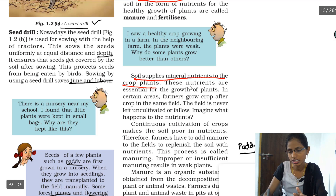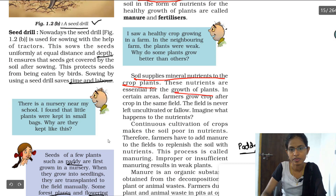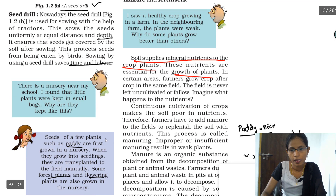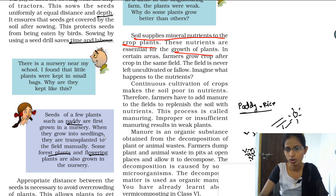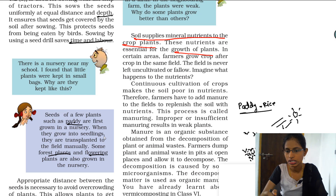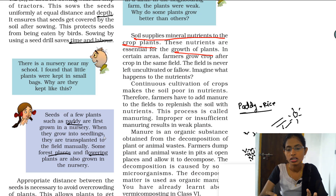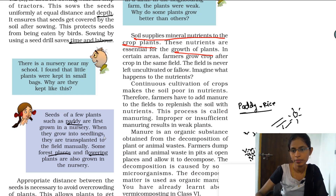Soil supplies mineral nutrients to crop plants, and these are essential for plant growth. If plants are grown continuously in all seasons, the soil loses its nutrients and minerals. To maintain the nutrients in the soil, fertilizers or manure must be added.